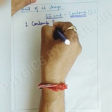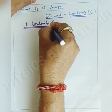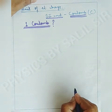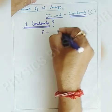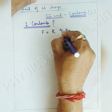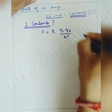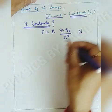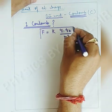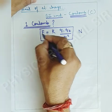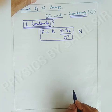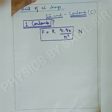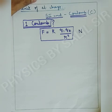We must know what is one coulomb. One coulomb can be defined based on the formula F = K·Q1·Q2 / R². The SI unit of force is Newton. This is the basic formula used to define one coulomb. We should not just memorize the definition but be able to write it using the concept.